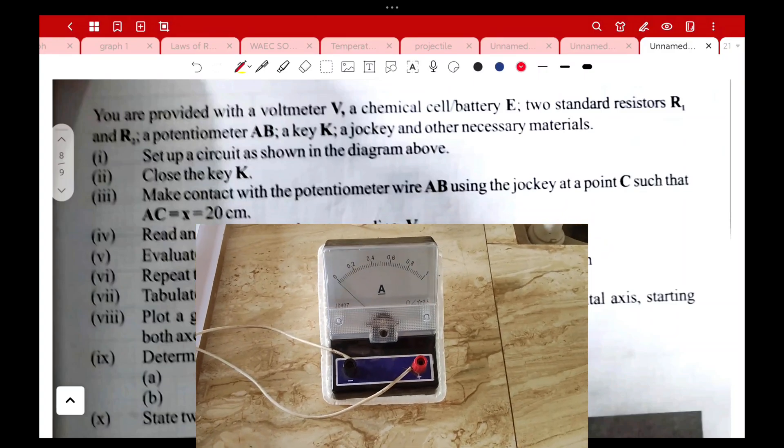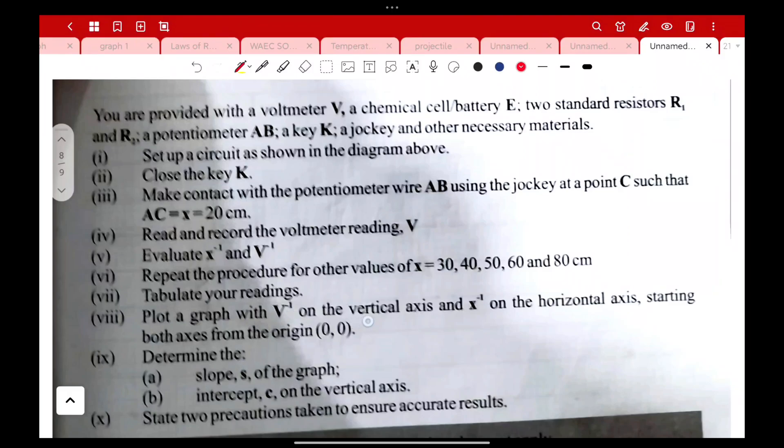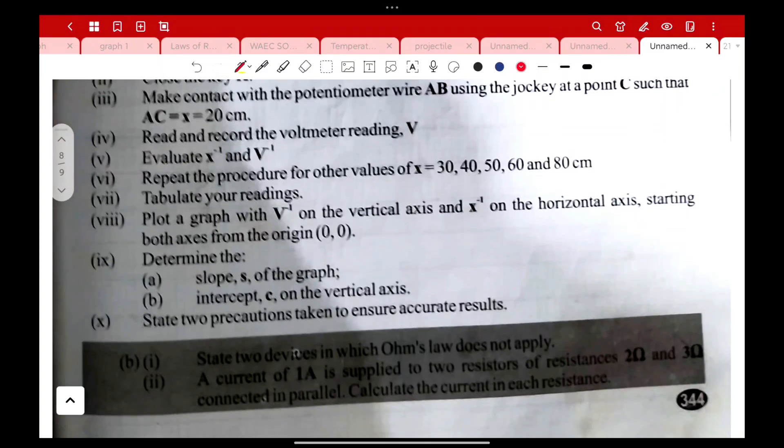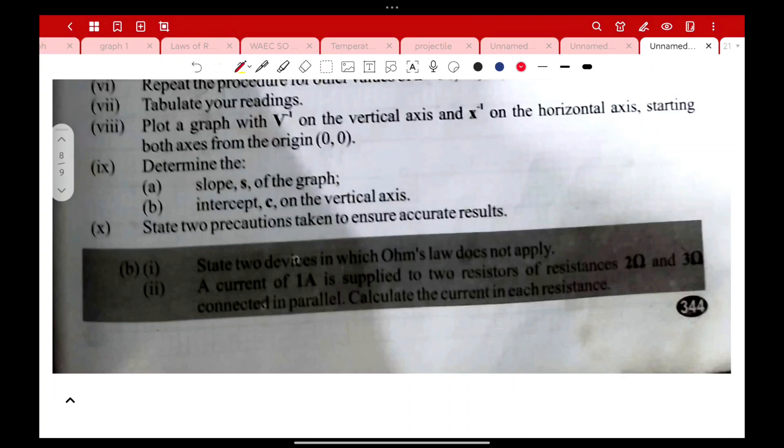You are asked to plot the graph of V inverse on the vertical axis against x inverse on the horizontal, beginning both axes from zero. Determine the slope, the intercept, and state two precautions taken to ensure accurate results. You have some other equations attached: state two devices in which Ohm's law does not apply, and a current of 1 ampere is applied to two resistors connected in parallel.